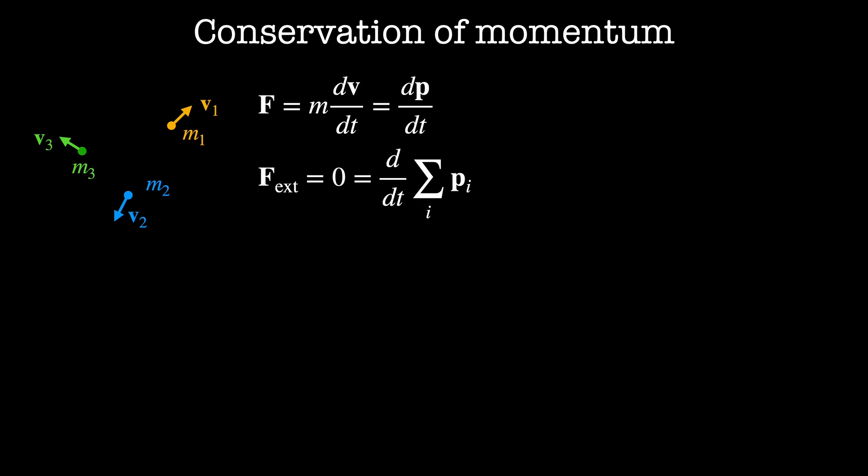If there are no external forces acting on our system, then the time derivative of the sum of all of the momenta is zero. This implies that the sum of all of the momenta in the system is a constant, and this is the formal statement of conservation of momentum.